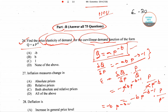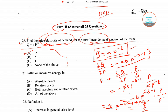Combining the exponents: −B·P^((−B−1)+1+(B)) = −B·P^0 = −B. So the P terms cancel out completely, and the price elasticity of demand for the curvilinear demand function Q = A·P^(−B) equals −B, which is option A.